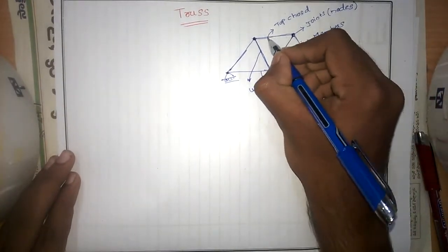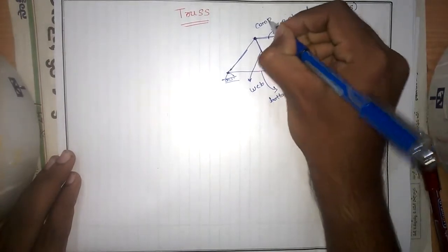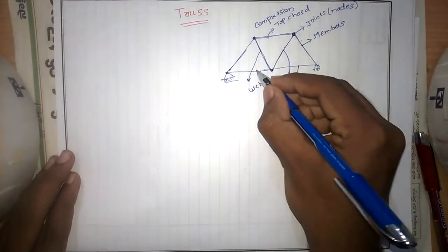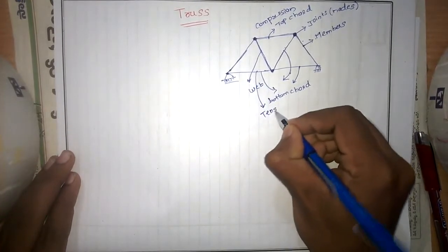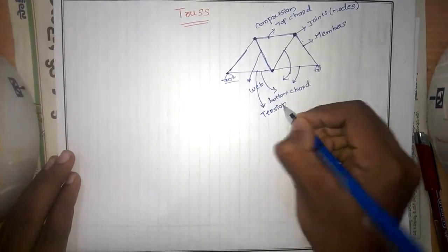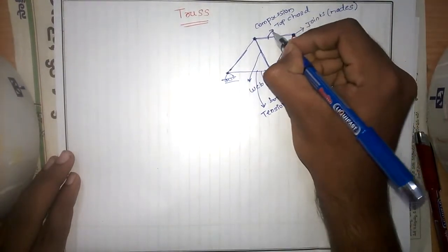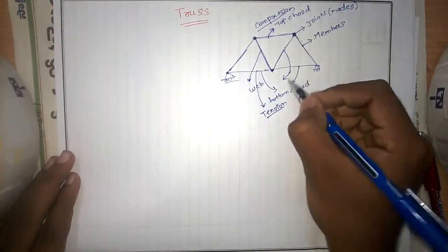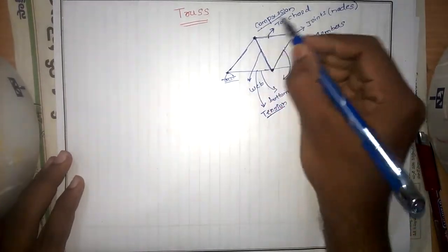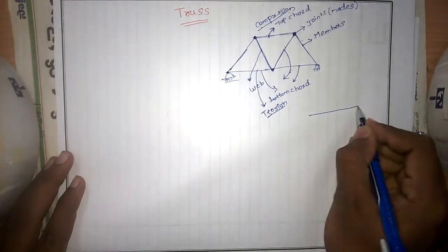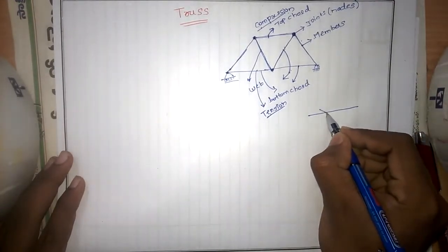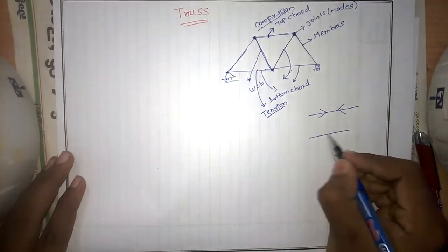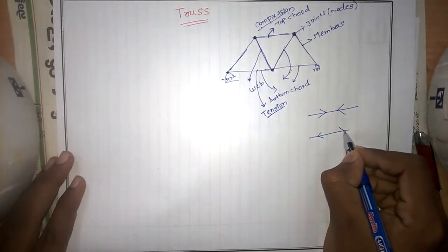Generally, the top cords will be in compression, and the bottom cords will be in tension. Compression means the forces are acting towards the member. If the forces are acting away from the member, they are said to be in tension.